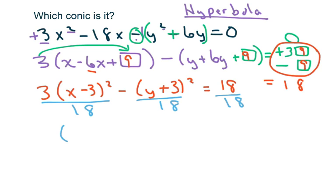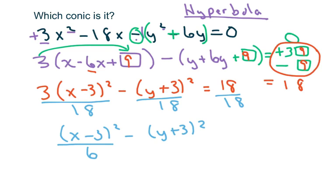Divide everything by 18 to put it in standard form, and you get (x − 3)² over 6 minus (y + 3)² over 18 equals 1. Now we want to graph this and find information about it.